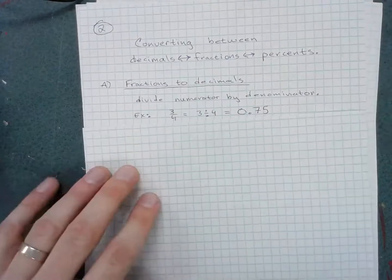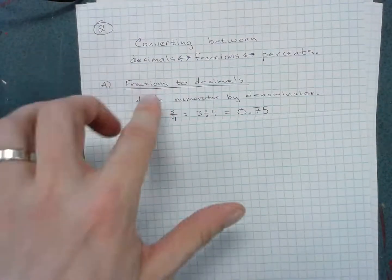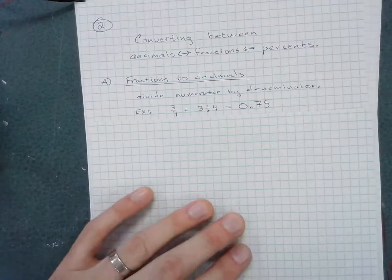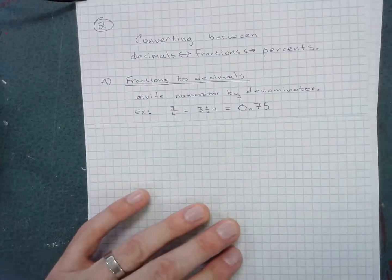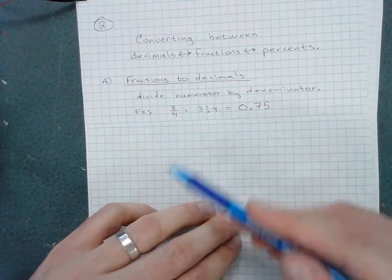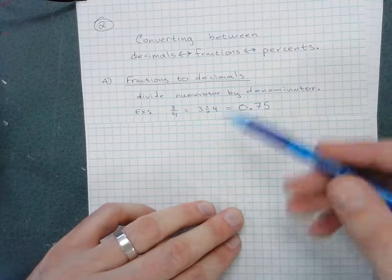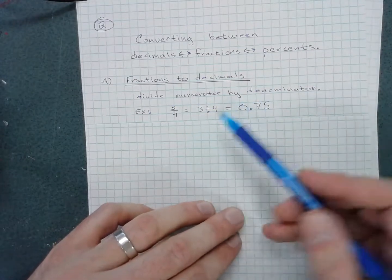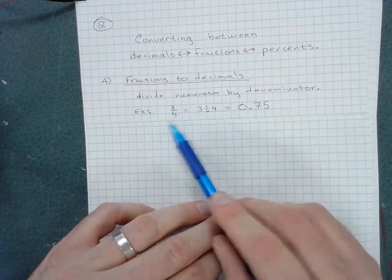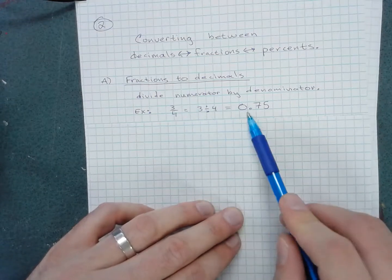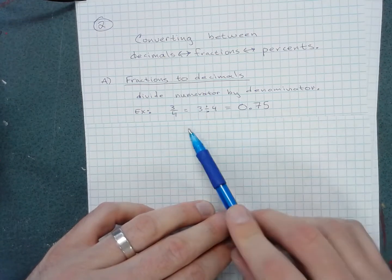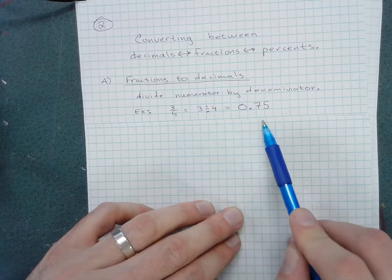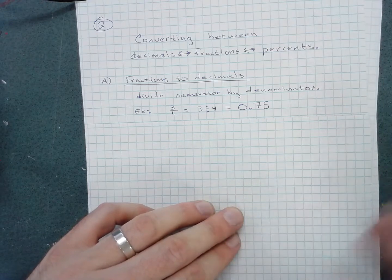The first is converting a fraction to a decimal. Fractions basically just mean divide, so if you have a fraction and want to express it as a decimal, just divide. For example, 3/4 as a fraction is 3 divided by 4, which equals 0.75 as a decimal.